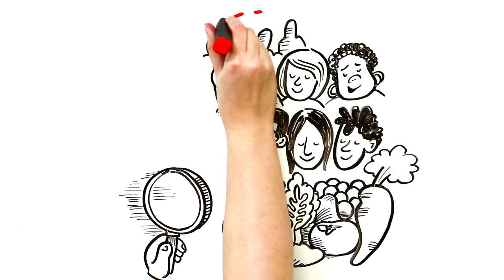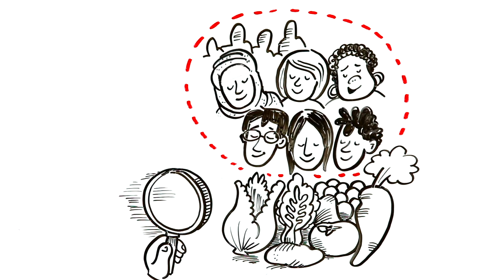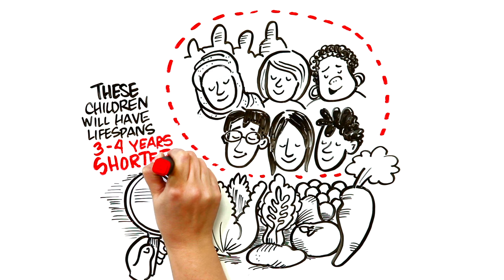We have a similar problem when we examine healthy living. Less than half of children and youth are getting the recommended number of servings of fruit and vegetable daily. Without change, these children will have lifespans that are three to four years shorter than today's adults, due to obesity.